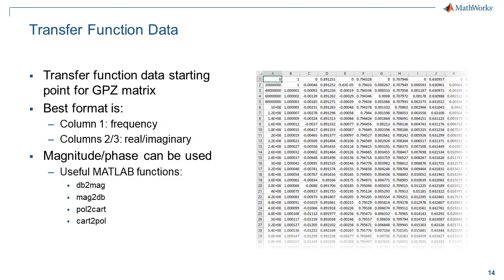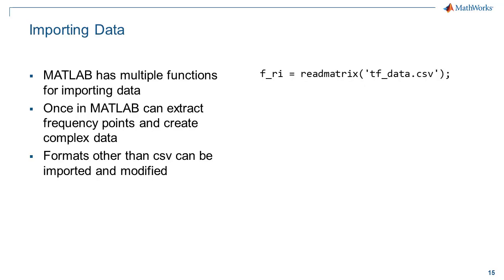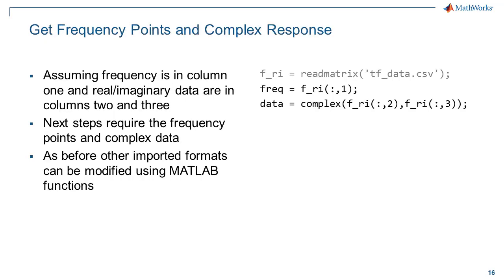For transfer function data, the easiest format to deal with is a CSV file with column 1 containing the frequency points and columns 2 and 3 being the real-imaginary transfer function data. MATLAB has multiple useful functions that can be used to reformat data that is in other formats. There are multiple ways to import data into MATLAB; the function readMatrix works well to read CSV data into a matrix. Once imported, the data is separated into a vector of frequencies and a vector of complex data. This is where the data may need to be converted from other formats such as magnitude-phase.